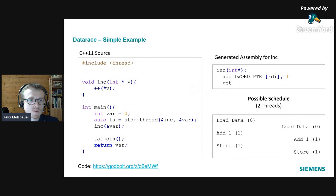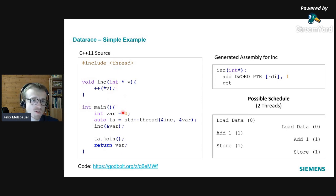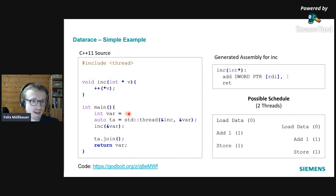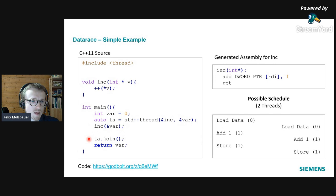Let's start with a simple example. Consider C++ code where we do nothing else than increment a value stored in a memory address. Here in main we declare a variable on the stack, start a new thread which calls the increment method with a pointer to that variable, and do the same in the main thread. Then we wait until both threads are joined and return the result. You would expect that since we increment two times, the return value is always two.